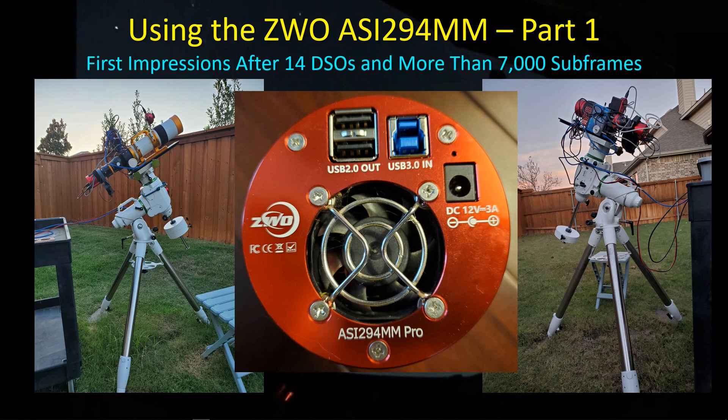Hey guys, welcome back. I've been using my ASI 294MM for 14 DSOs and 7,000 subframes, so I thought I'd stop down here for a moment and give you some first impressions. I haven't had an opportunity to go through all the data and process all of the frames. I have been through some of the DSOs at least once, and I'm liking the results, but I've had a few surprises as well.